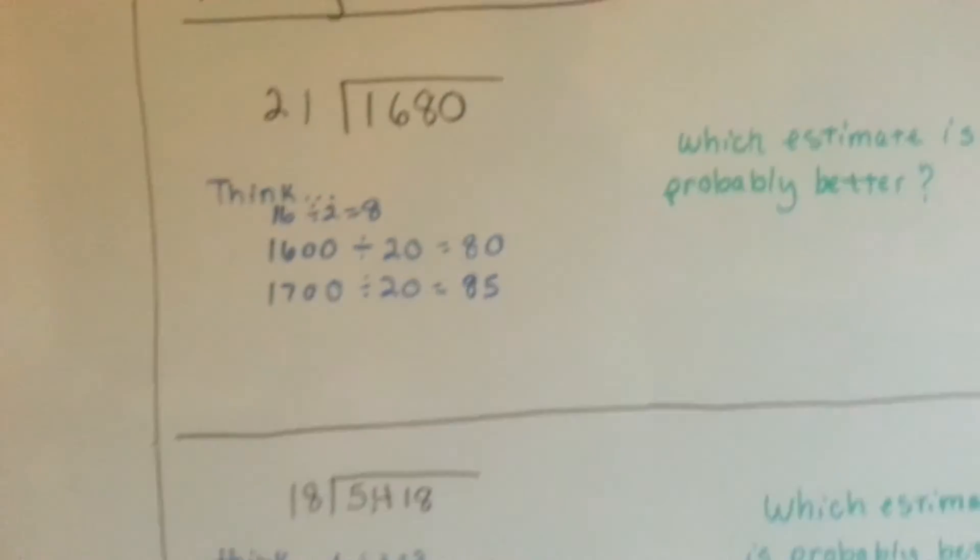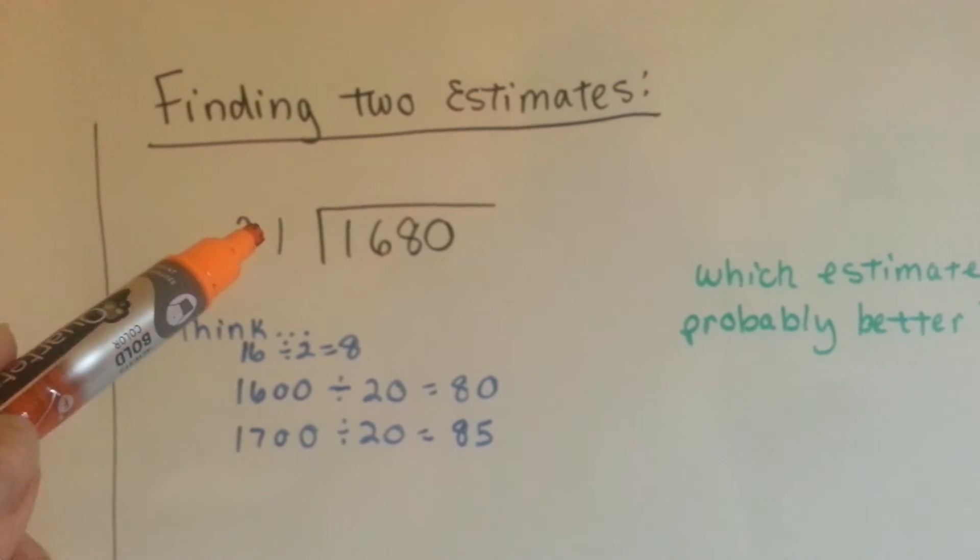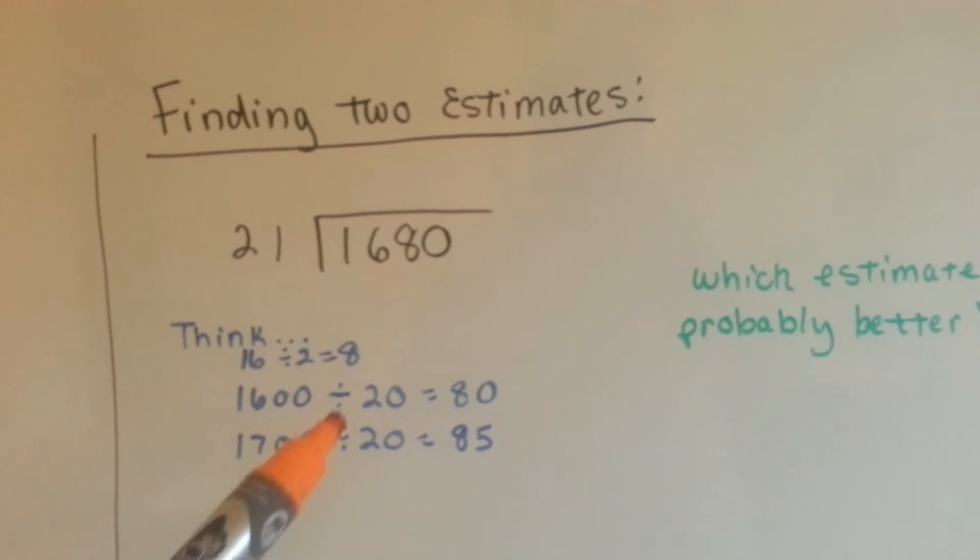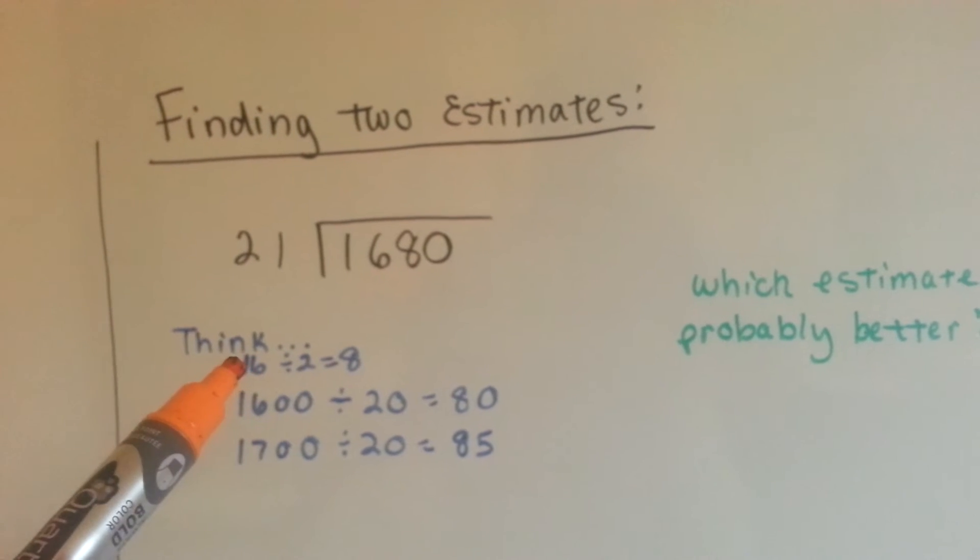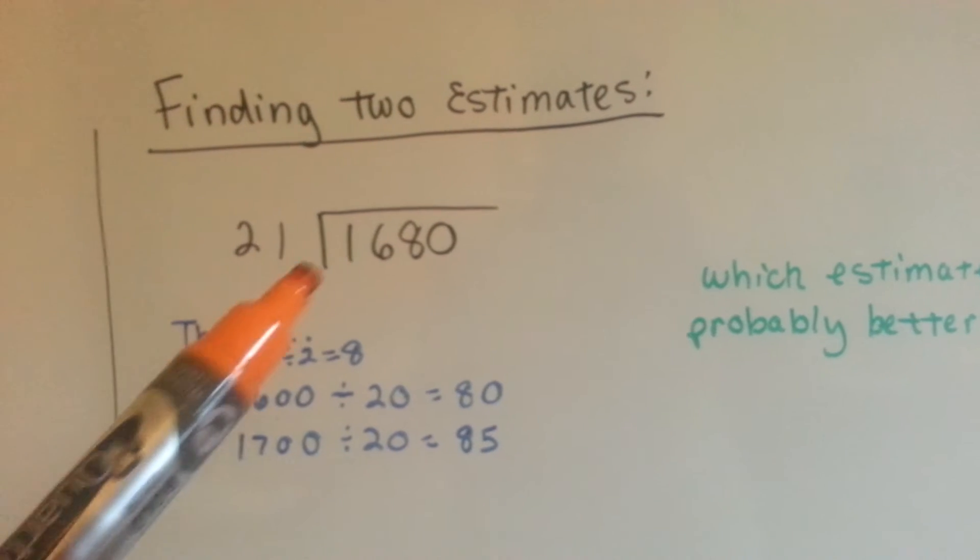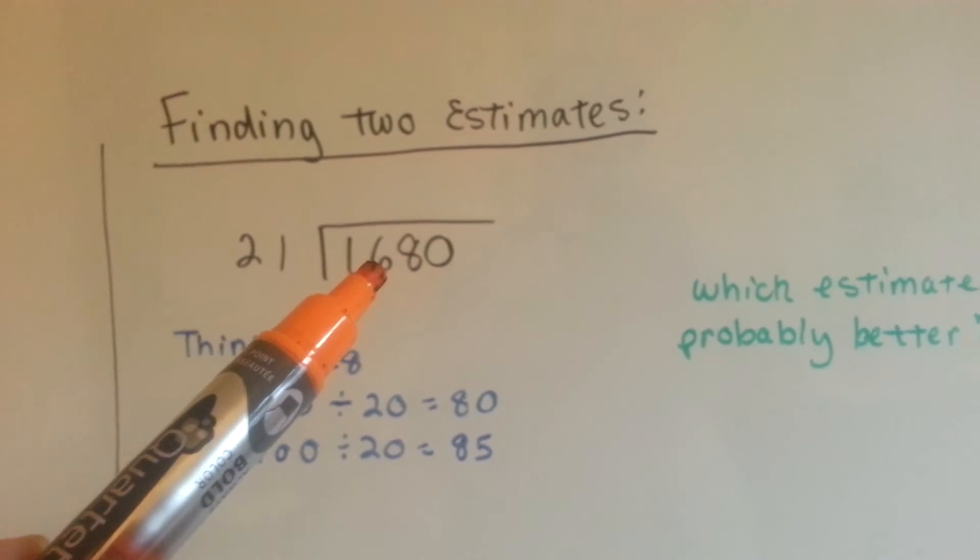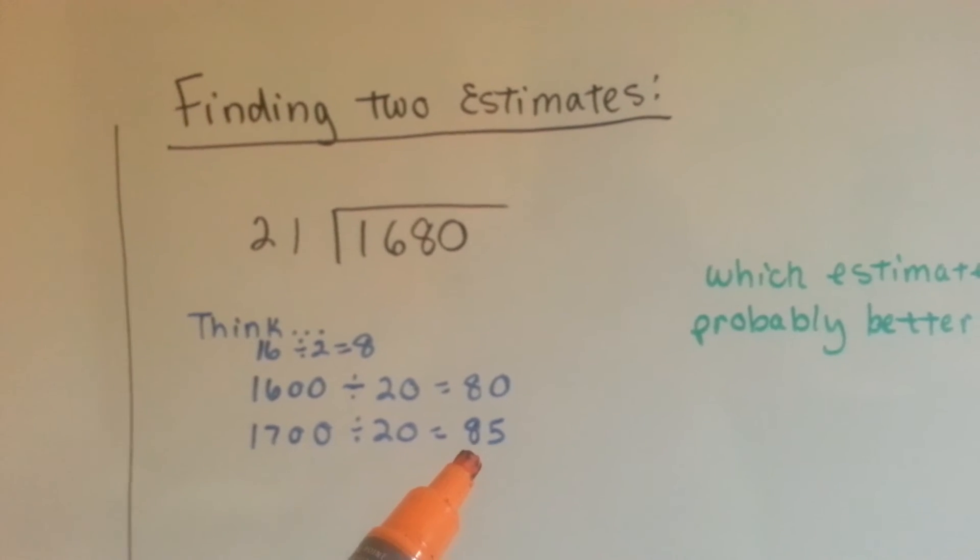You can also find two estimates, like a high and a low. We could say that this is 20 and this is 1,600. And we could think 16 divided by 2 is 8 because 2 times 8 is 16. So 1,600 divided by 20 is 80. We could also think, well, it's really closer to 1,700. So 20 goes into 1,700, it would be 85 times.